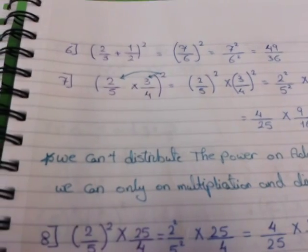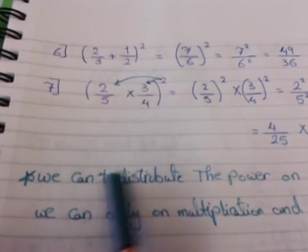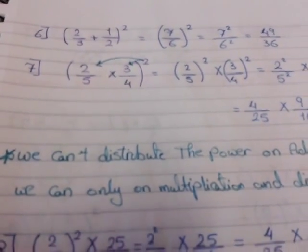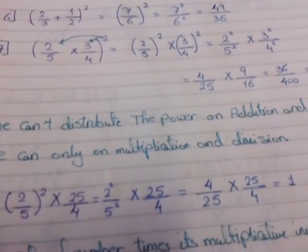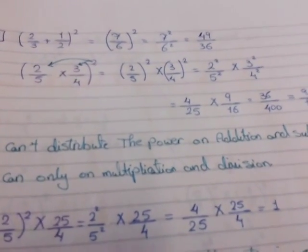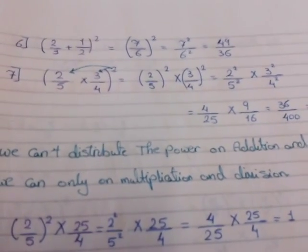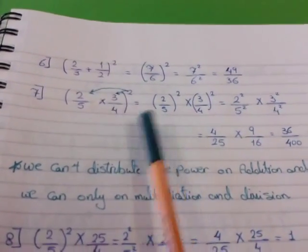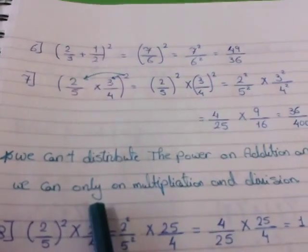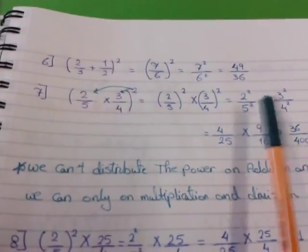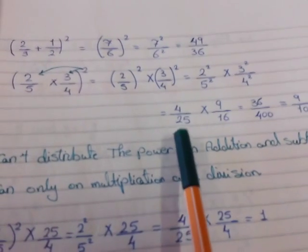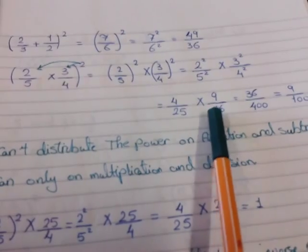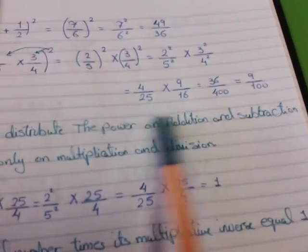Number 7: 2 over 5 times 3 over 4, all to the power 2. Here I will distribute the power 2 to each fraction. Why? Because we can't distribute the power in addition and subtraction, but we can distribute the power in multiplication or division. So in the case of addition or subtraction, we can't distribute the power. But in multiplication and division, we can distribute: 2 over 5 all to the power 2, times 3 over 4 all to the power 2. Then distribute the power in each rational number: 2 power 2 over 5 power 2, times 3 power 2 over 4 power 2. 2 power 2 gives 4 and 5 power 2 gives 25. 3 power 2 gives 9 and 4 power 2 gives 16. Then make a multiplication.